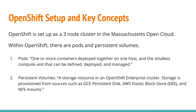Before we get into detail about what exactly happens in OpenShift, here is a quick summary of how it was set up and some key concepts. OpenShift is set up as a three-node cluster in the Mass Open Cloud. Within OpenShift, there are pods and persistent volumes. Pods are containers deployed on one host, and persistent volumes are a storage resource on the OpenShift cluster. We use pods to deploy our computation containers, and persistent volumes for storing the files that need to be processed.